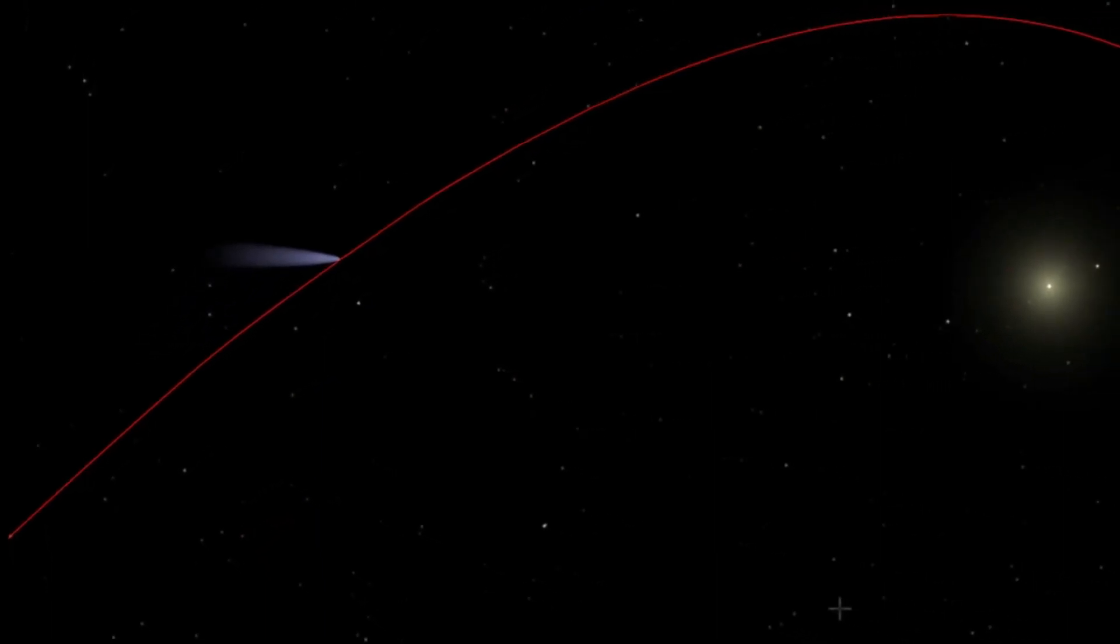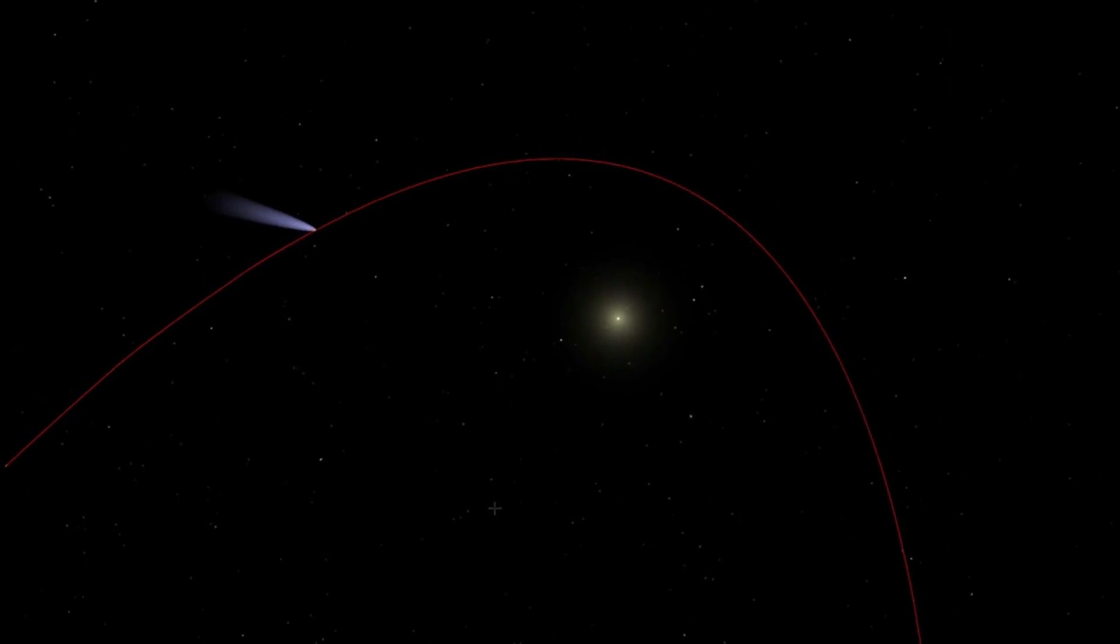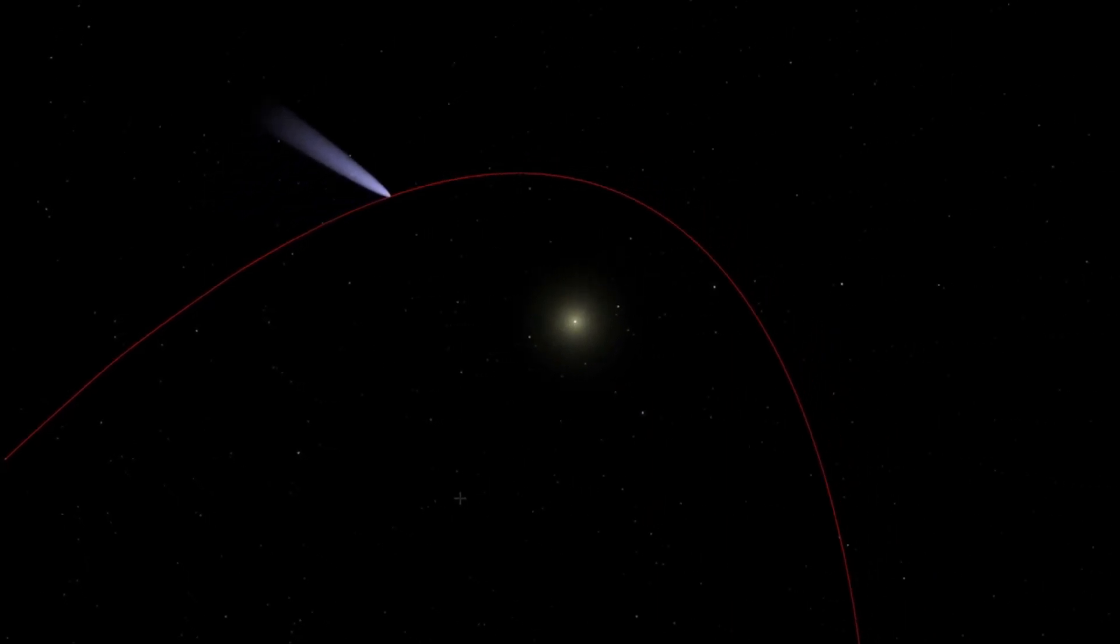C-2019 Y-4 Atlas, or Comet Atlas, is a near-parabolic comet which was discovered by the Atlas Survey on December 28, 2019.